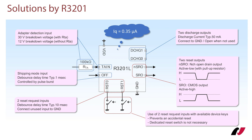Once the reset cycle is triggered, it will provide an actual reset period of 0.4 seconds controlling the SRO and NSRO outputs. Additionally, the R3201 has two N-channel open drain discharge outputs called Discharge 1 and Discharge 2. The purpose is to discharge output capacitors to ground during the reset cycle, ensuring that the power lines are completely de-energized. The application processor is able to send a short clock pulse signal to the OFF input pin and the R3201 will switch to the shipping mode after 15 seconds.